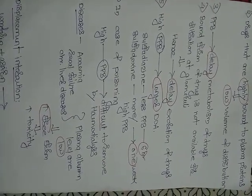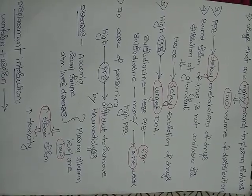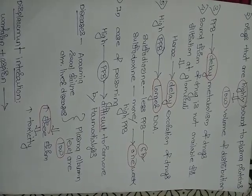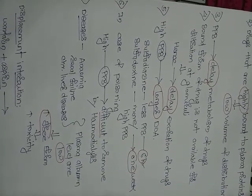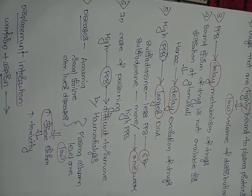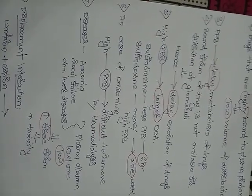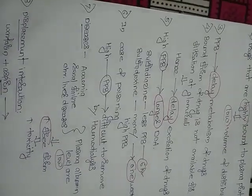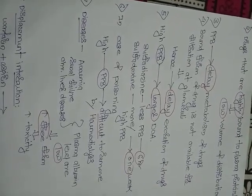In diseases like anemia, renal failure, chronic liver disease, or hypoalbuminemic states where plasma albumin levels are low, there is an increase in the free form of the drug. This increases toxicity at the therapeutic dose, potentially leading to therapeutic toxicity.